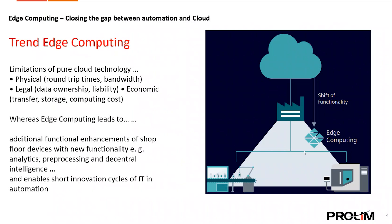The limitations of pure cloud technology include physical limitations such as roundtrip times, latency, and bandwidth constraints that affect performance. Legal concerns around data ownership and liability arise when using cloud platforms, as data is stored off-site. Economically, the cost of data transfer, storage, and computing power can be higher when relying purely on cloud technology.